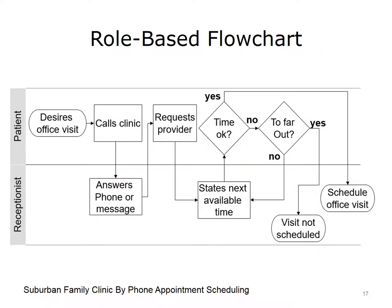In this scenario, patient Patty wakes up at 5:30 a.m. feeling awful and decides to call for an appointment with her primary care provider. She calls Suburban Family Clinic. The important steps to diagram are those that directly interface with the clinic in some way. In this scenario, we do not need to represent anything about what time the patient calls or why she decided to call. It is just important to diagram the trigger event, i.e., the patient desires an office visit, and the step that interfaces with the clinic, i.e., the patient calls the clinic.